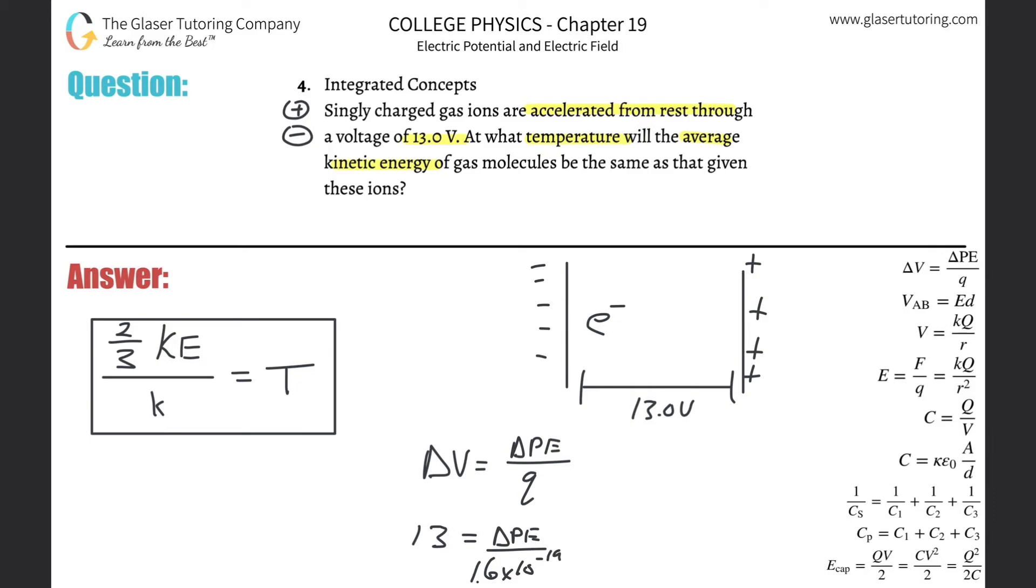Whether it's negative or positive, who cares? We're basically just taking absolute values here. So 13 times 1.6 times 10 to the minus 19th. And there we go. Change of the potential energy therefore is going to be equal to 2.08 times 10 to the negative 18th.